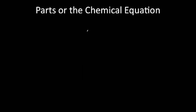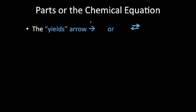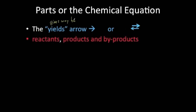Now let's discuss the parts of a chemical equation. Other symbols include the yields arrow, which indicates the direction of the reaction. Many reactions can go in both directions, so sometimes you'll see arrows going in opposite directions. The yields arrow indicates what's happening — it means 'gives way to' or 'produces.' You'll also have reactants, products, and byproducts.